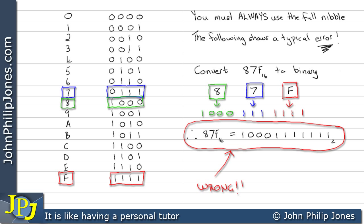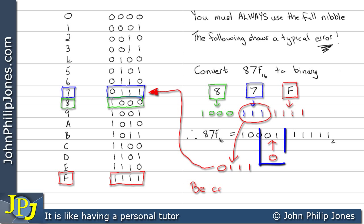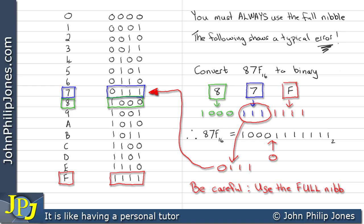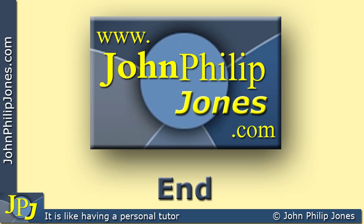But this is quite simply wrong — we've made a typical mistake. That is seven, but we didn't use the full nibble. We have to use it as it appears in the table, and the zero is missing. So be careful: always use the full nibble. Even though you know one, one, one is seven, you must remember the zero.